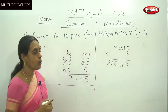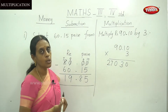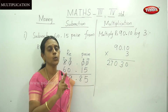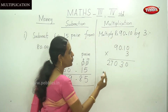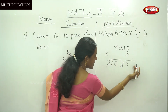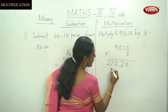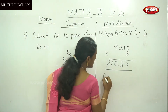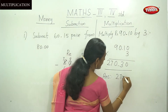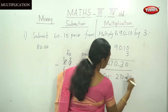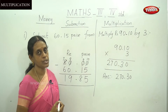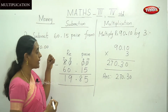Now, how to place the dot: since 1 Rupee equals 100 Paise, you count two digits from the right-hand side to the left-hand side and place a dot there. So the answer is 270 Rupees 30 Paise. This is the method for multiplication in money.